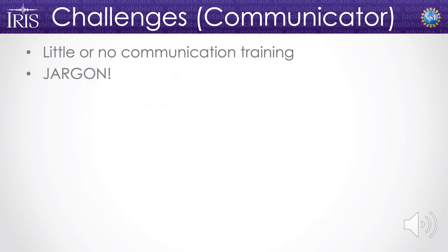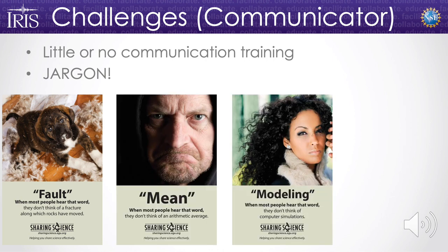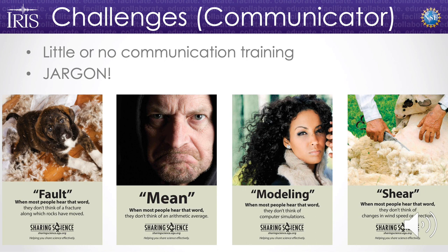Also: jargon. Jargon can be great — it's a shorthand for scientists to talk to each other — but outside of our small sub-disciplines, jargon can be really problematic. The Sharing Science team at AGU has put together examples of different kinds of jargon. Words like 'fault' — most people outside of tectonophysics wouldn't think about fault in terms of earthquakes. The same with 'mean,' 'modeling,' or 'shear.' Also words like 'elucidate' or 'utilize' — these million-dollar words complicate our speech. We can probably do away with those to make our communication more understandable.